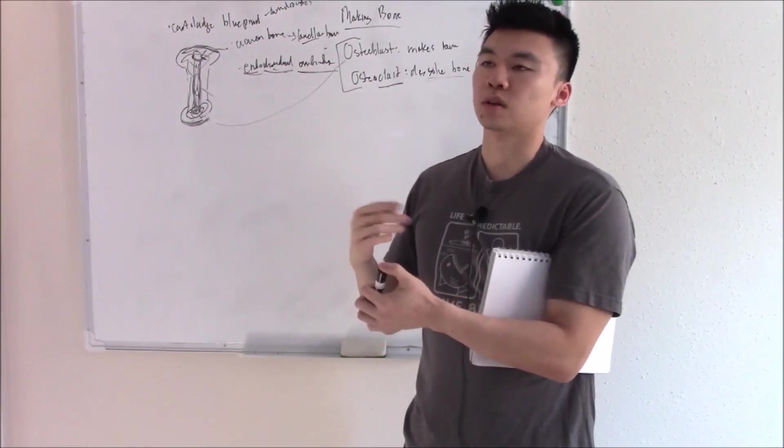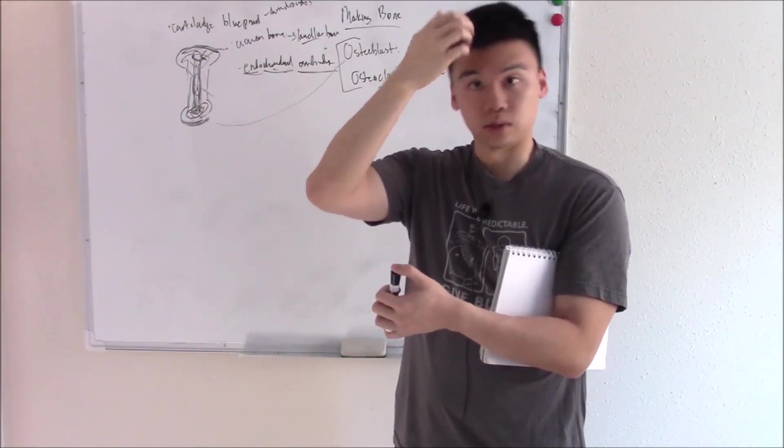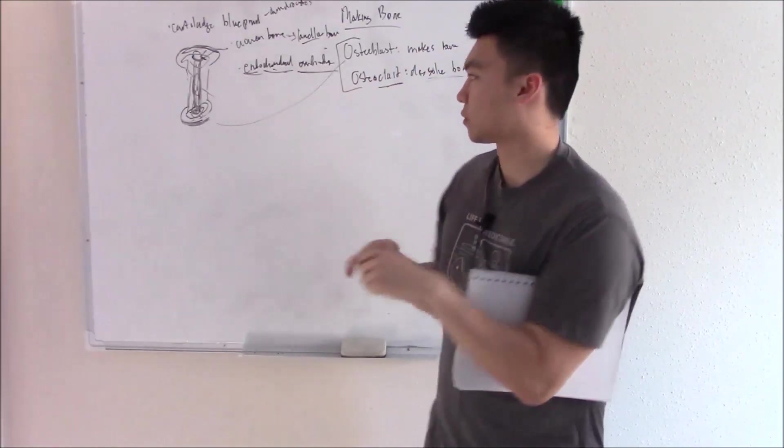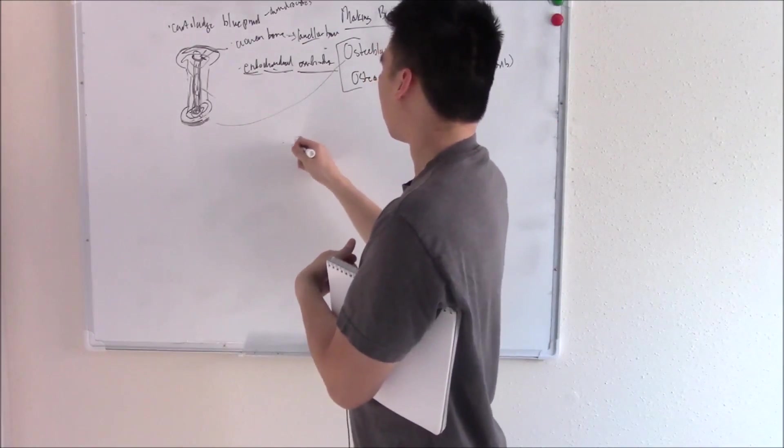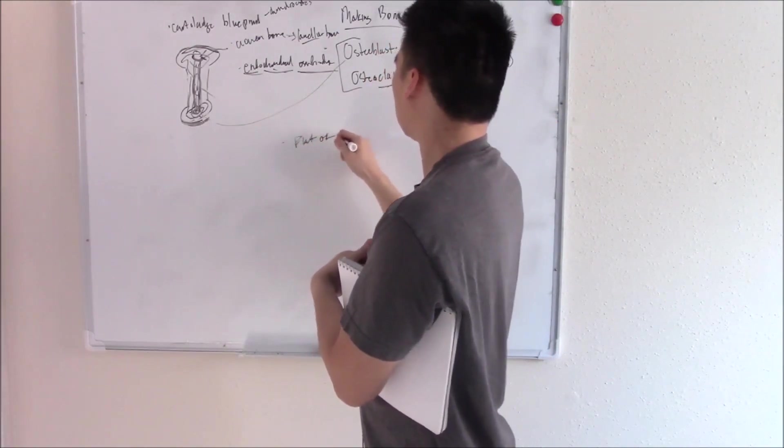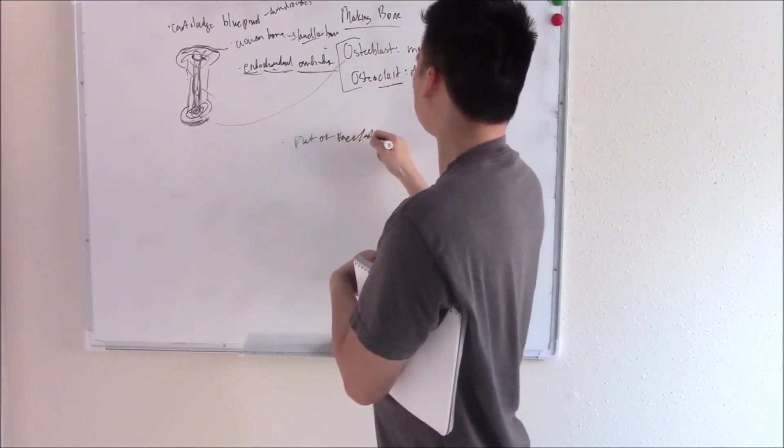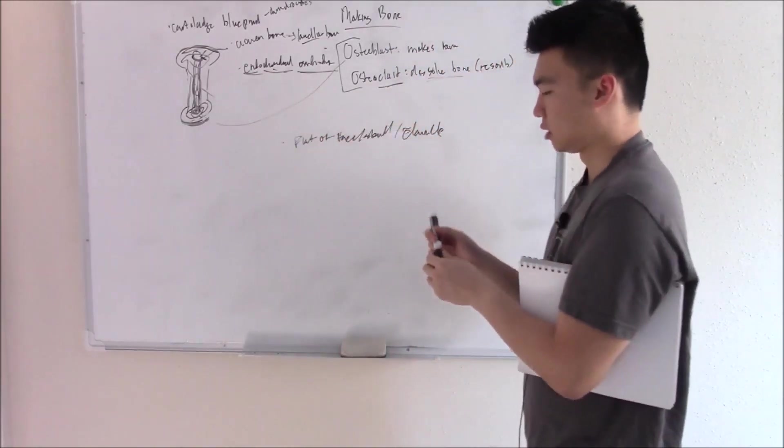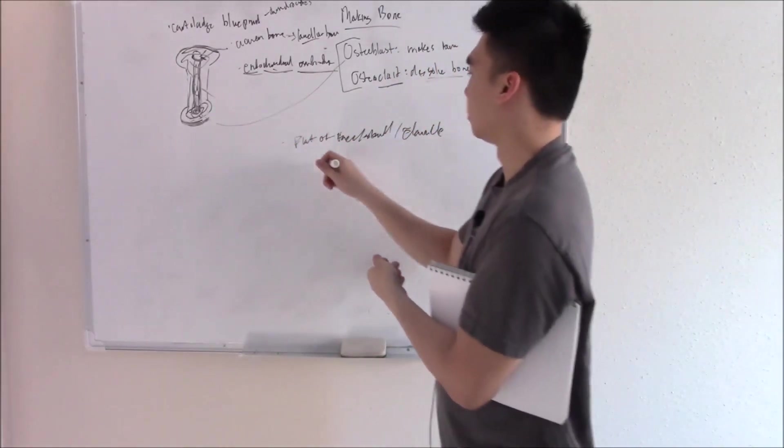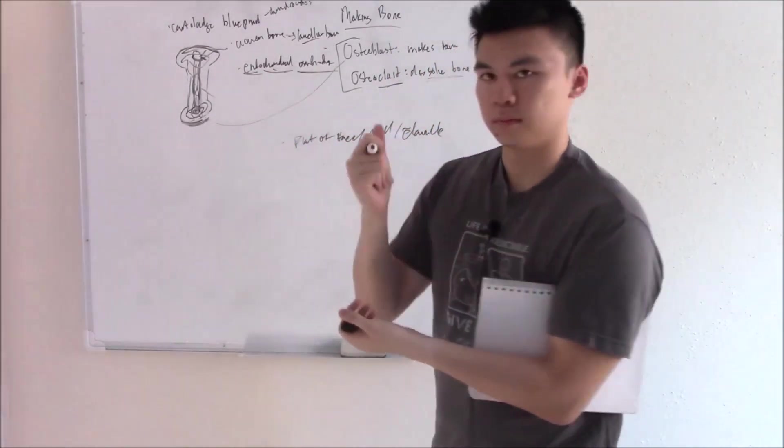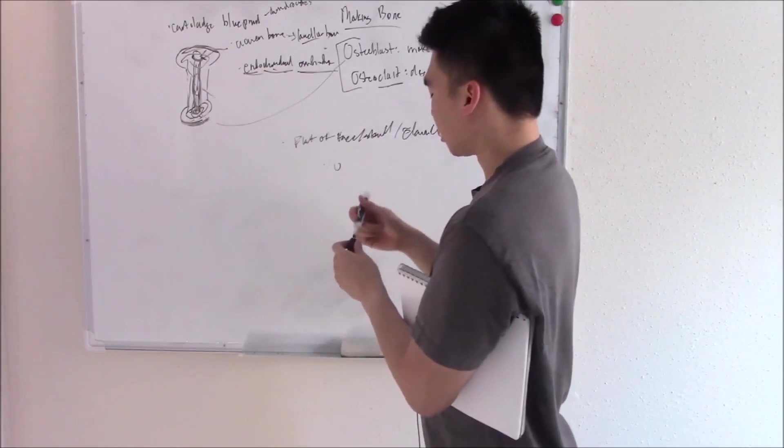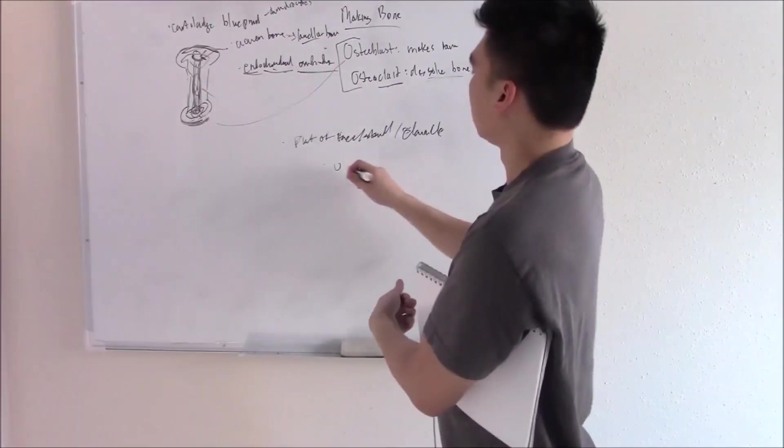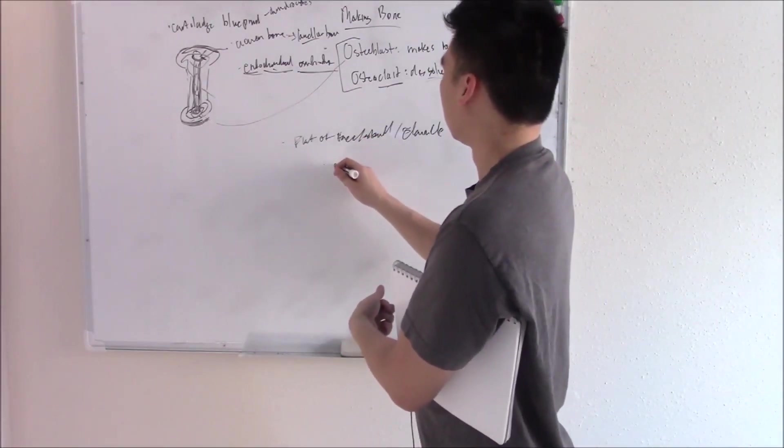However, certain parts of your body, like your flat bones of your skull, the facial bones, your jaw, your clavicle, don't go through this process. Flat bones of face, skull, clavicle don't use this process. They don't need a cartilage blueprint. They can just make bone right off the bat. The osteoblast just comes together, forms a sheet, and just makes bone.